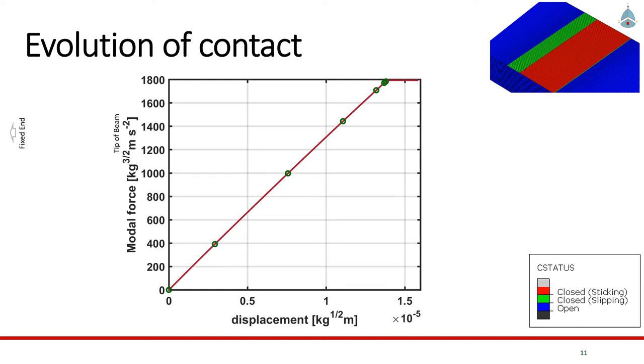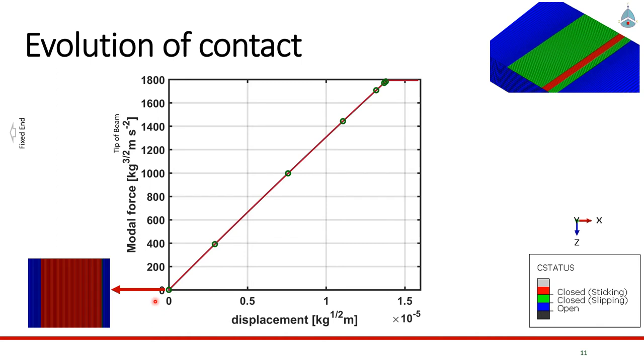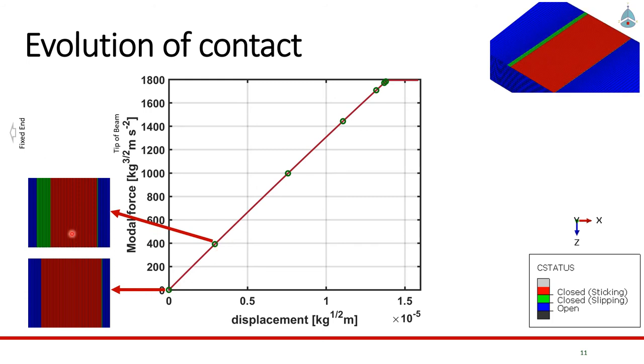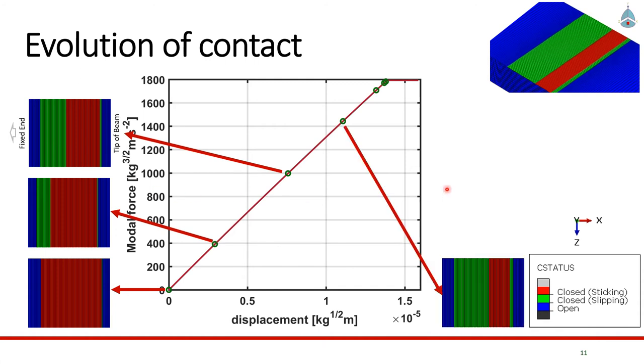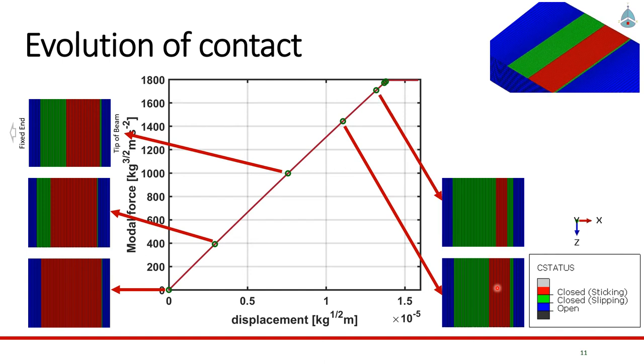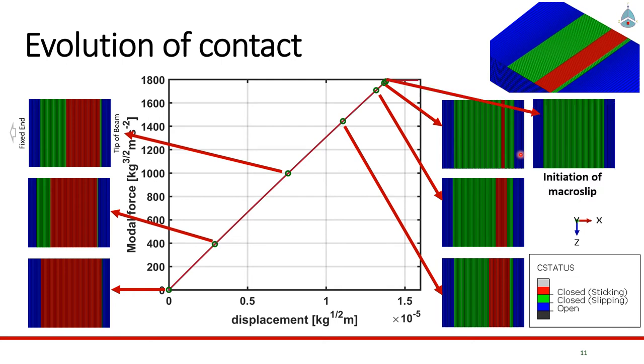We looked at the evolution of contact by plotting the contact status in Abaqus for different points along the restoring force curve. At zero displacement, the entire contact patch is stuck, as we would expect. Note here that this side is the fixed end and the other side is the free end. As we go to higher amplitudes, we can start to see the contact patch on the side of the fixed end starting to slip. As we keep going ahead, we can see more of that happening. Then as you go to amplitudes beyond a certain point, we start to see the right-hand side also starting to slip, which is accelerating the slip that is occurring. The rate of slip has actually started to increase at this point until we reach the initiation of macro slip.